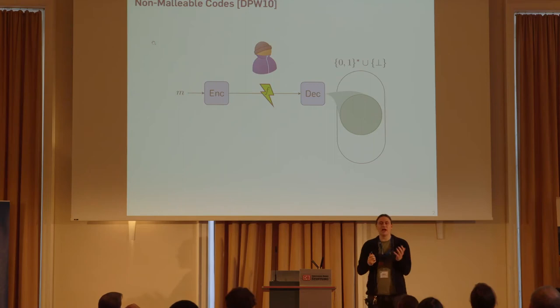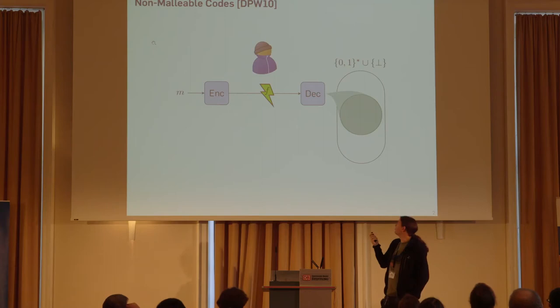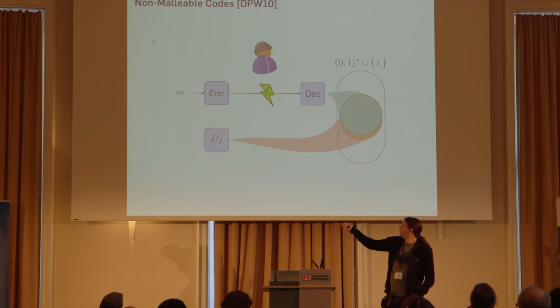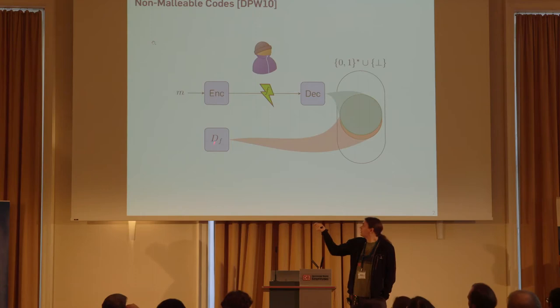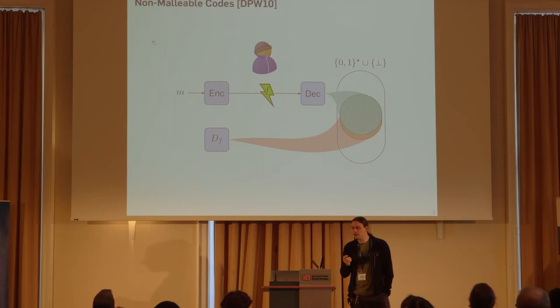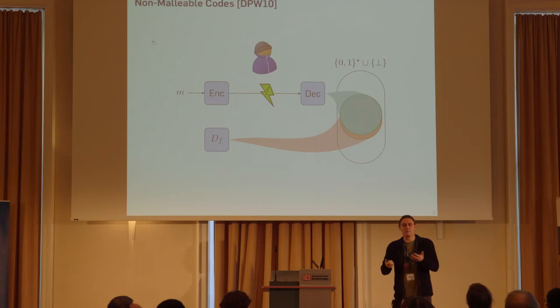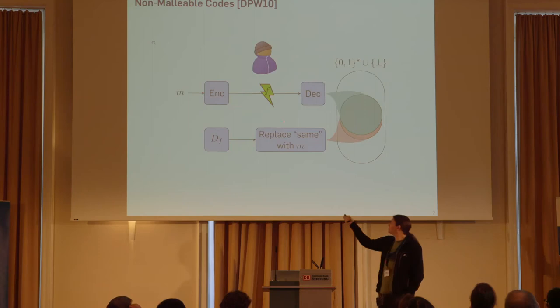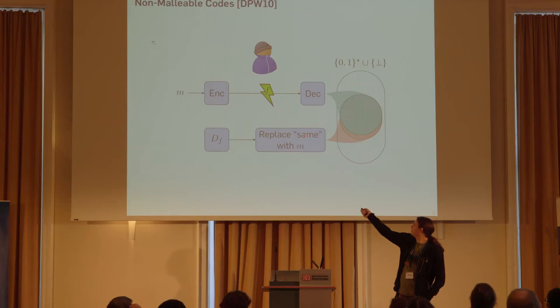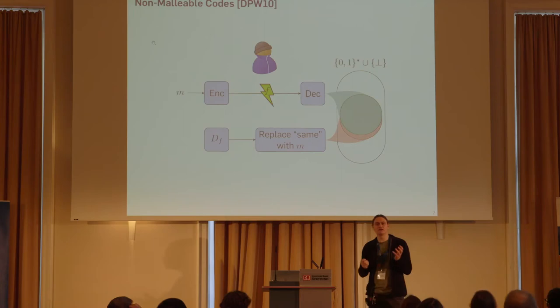What we're trying to prevent is that an attacker could somehow modify the code word so that you get a related message m'. Formally, we define that there exists some distribution d_f that we can sample from, sampled independently of the message m but depending on the function f, such that it is statistically close to the actual output distribution. This doesn't quite work because, for example, using the identity function as the tampering function gives a distribution that is constantly m, which obviously depends on m. So instead, we say this distribution is over a support that includes a special symbol called 'same', and if this symbol occurs, we replace it with the message m. These two distributions should be statistically close — if you have that, you have a non-malleable code.